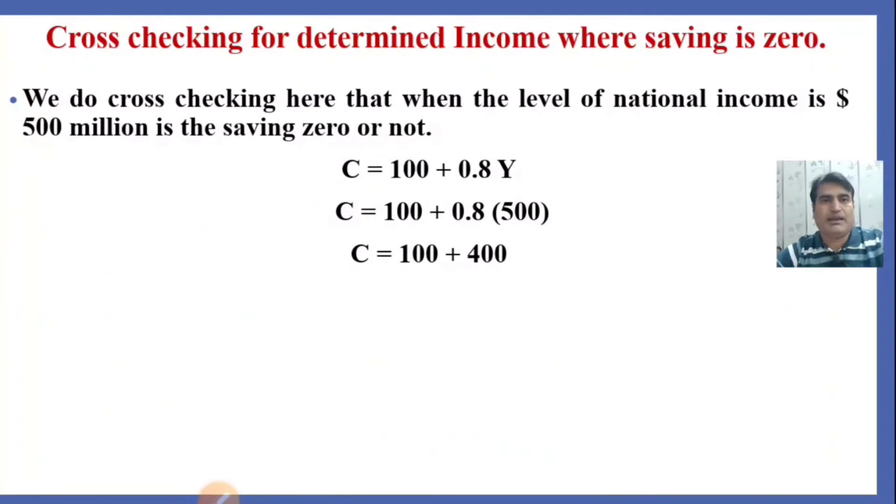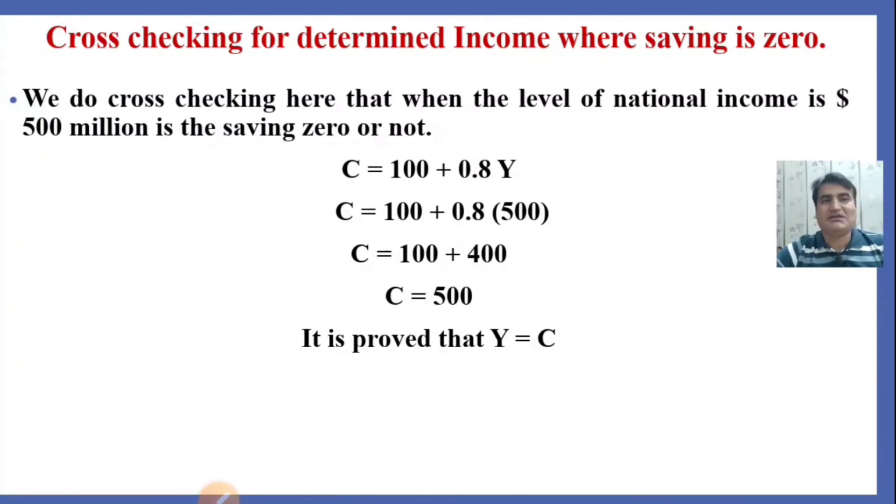By plugging the value of income that we have found, 500 million dollars, the total consumption is 500. It is proved that income is equal to consumption and savings are zero. I hope this will be helpful for you.